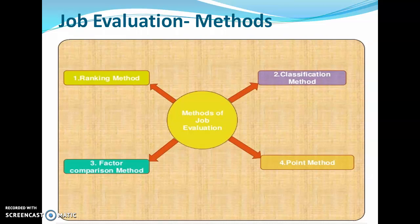The fourth method is the point rating method. It is also a stepwise process where a number of factors are considered. In the first step, we select various factors such as education, experience, initiative, physical effort, mental effort, responsibility for equipment, responsibility for a process, responsibility for work of others, working conditions, hazards, adaptability, and attitude for learning and initiative.